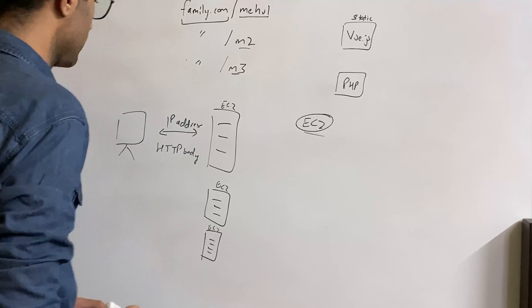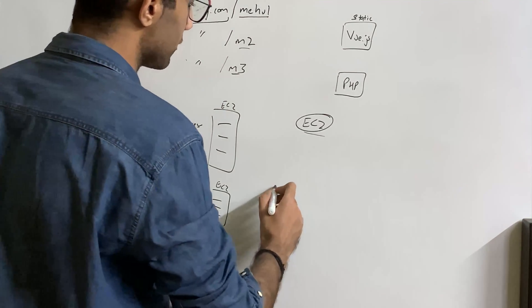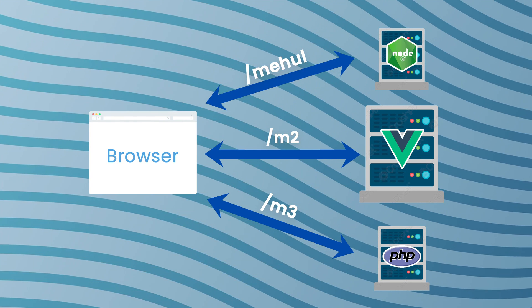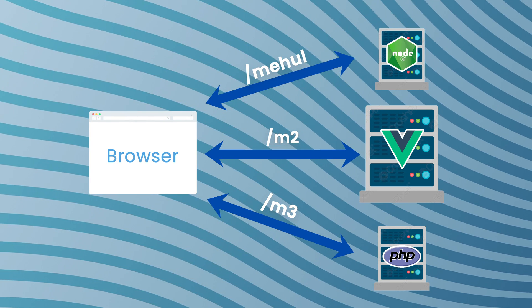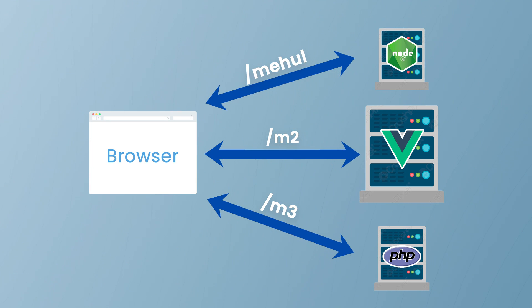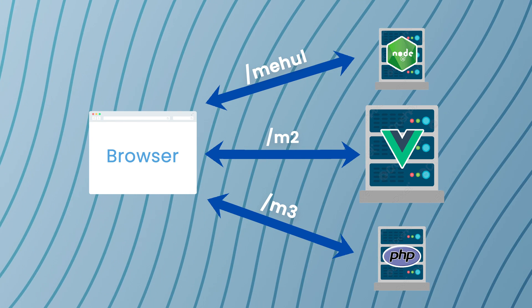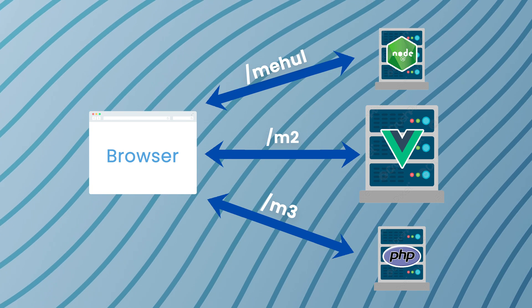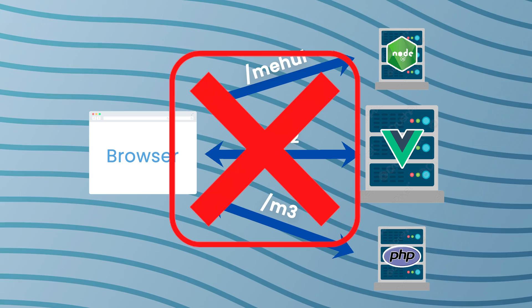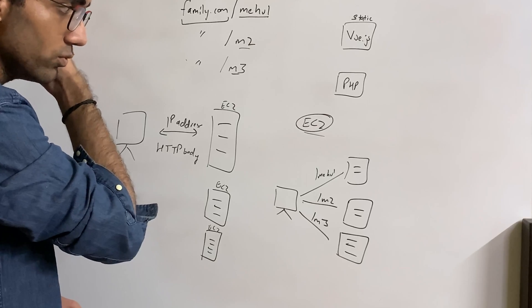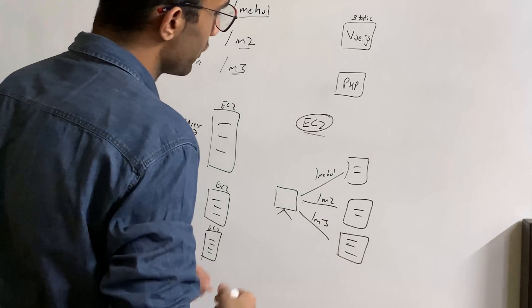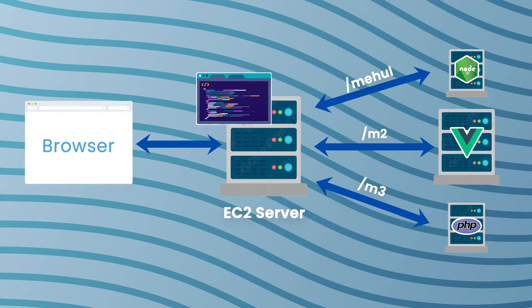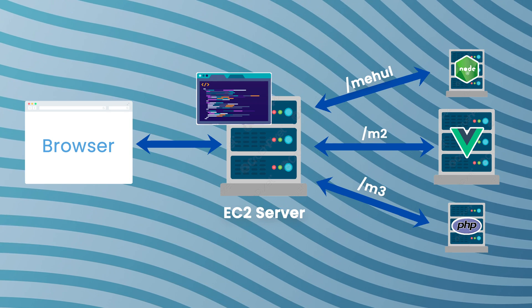So this is where things get interesting. What we actually wanted to do is we wanted to say that, hey my client, if you're on slash Mehul then you want to have this Node.js, which might be another server. This could be another server for let's say m2, and this could be another server for let's say m3. But we just showed that this architecture is not possible.